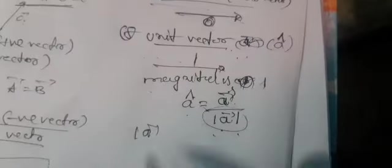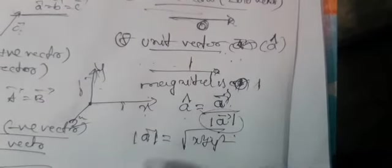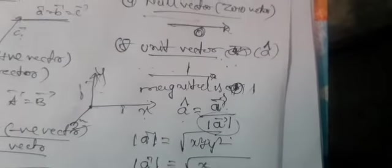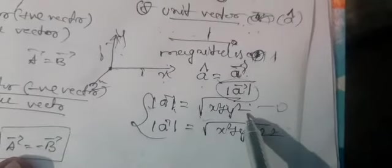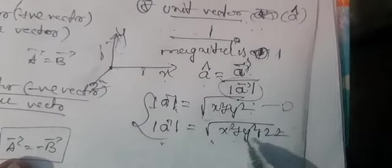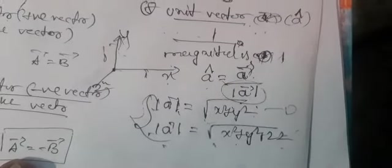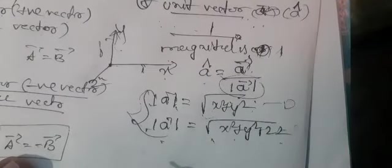The modulus of vector A is represented using coordinates. There are three coordinates: x, y, and z, corresponding to i-hat, j-hat, and k-hat. For two dimensions, the modulus of A equals root of x-squared plus y-squared. For three dimensions, the modulus of A equals root of x-squared plus y-squared plus z-squared. This completes the concept of unit vector.